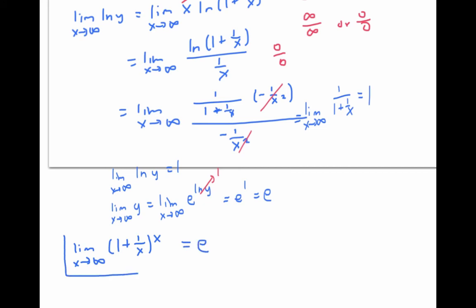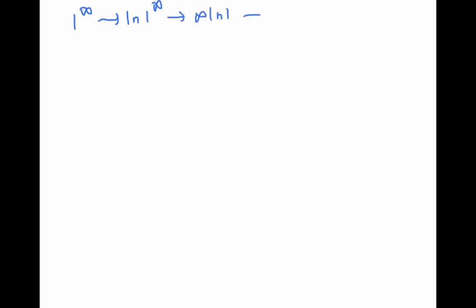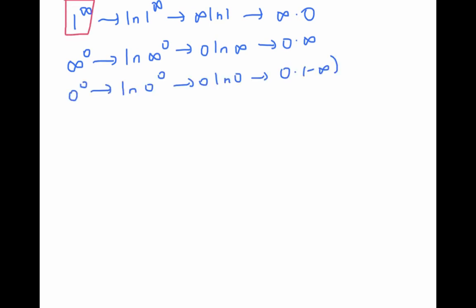In fact, you may recognize that this limit is one of the ways of defining e. In the previous example, we had a one to the infinity indeterminate form, and we took logs and used log rules to write that as an infinity times zero indeterminate form. The same thing can be done if we have an infinity to the zero indeterminate form, or a zero to the zero indeterminate form. So one to the infinity, infinity to the zero, and zero to the zero are all indeterminate forms that can be handled using L'Hôpital's rule.